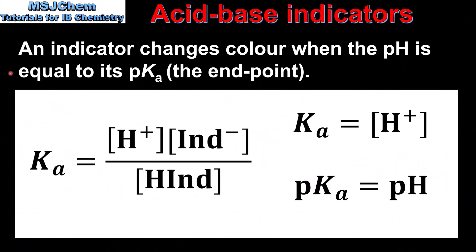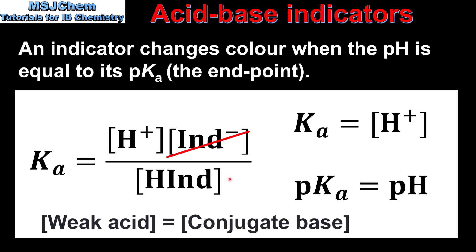To end the video, we look at the point at which an indicator changes color, and this occurs when the pH of the solution is equal to the pKa of the Acid Base Indicator. This point is known as the end point of the indicator. When an Acid Base Indicator is in the middle of its color change, the concentration of IND- and HIND are the same, so these two cancel out in the Ka expression, leaving Ka equal to the concentration of hydrogen ions. Taking the negative log of both sides gives us pKa equals pH, which is the end point of the indicator.